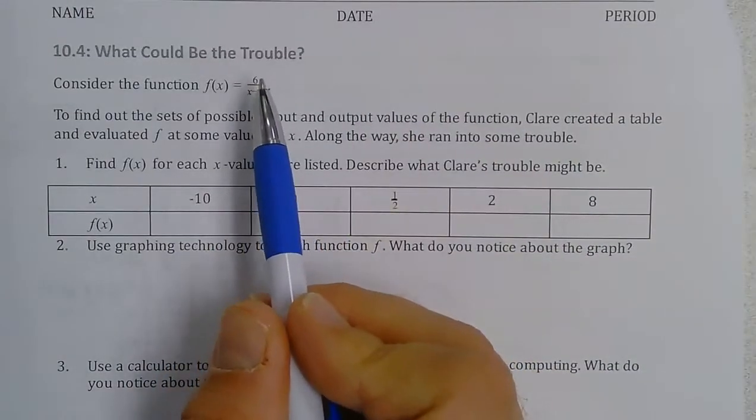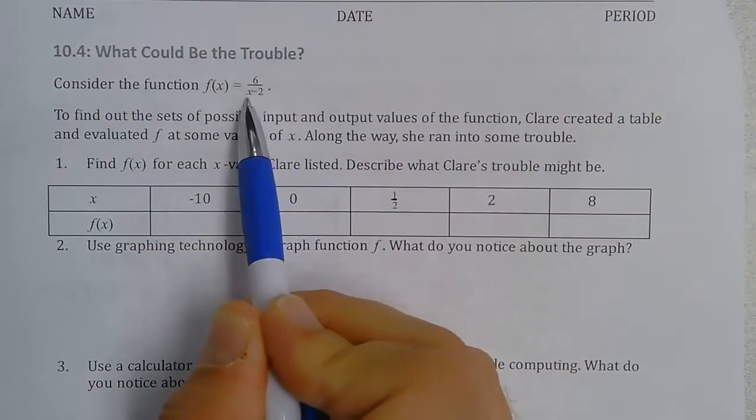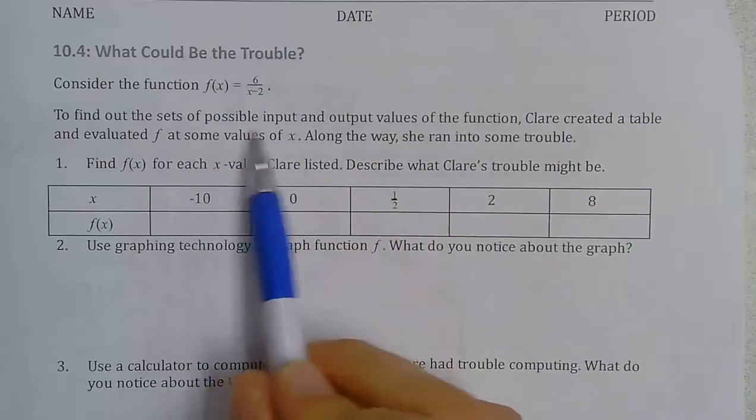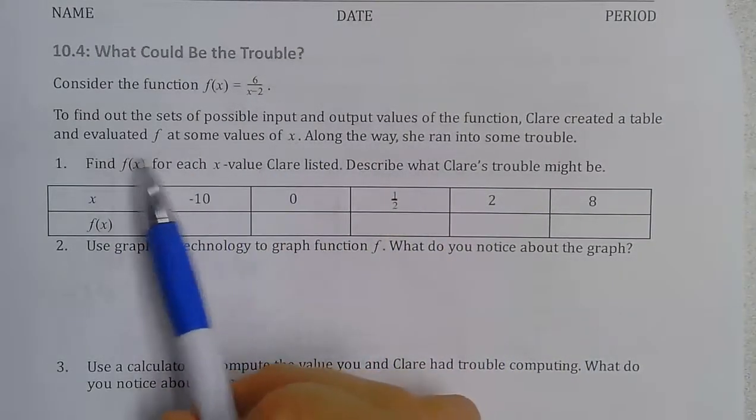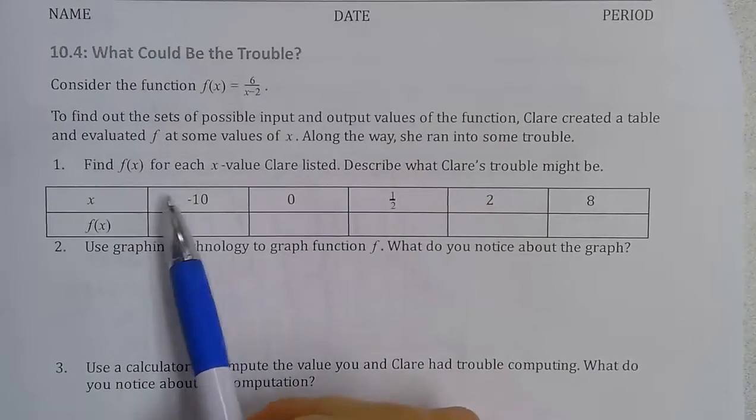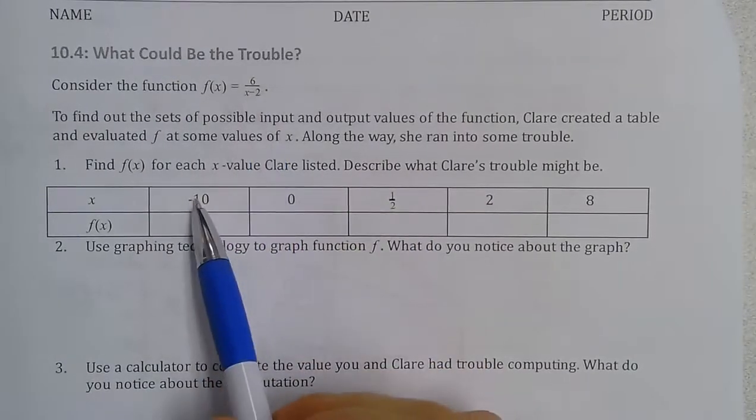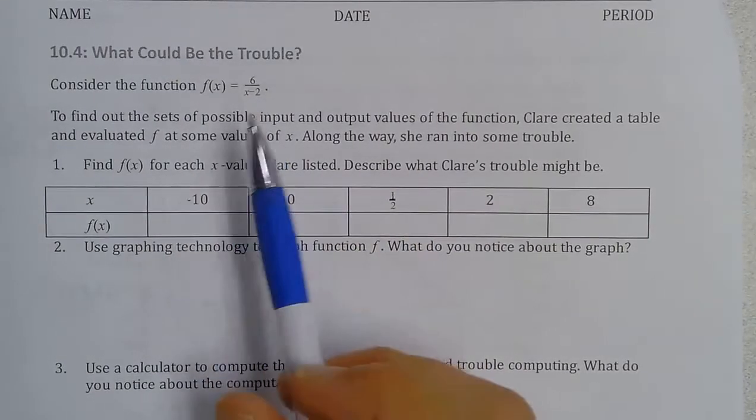So now we're going to look at the function 6 divided by x minus 2. We're going to find some input-output tables and calculate the output value for some input values of x.